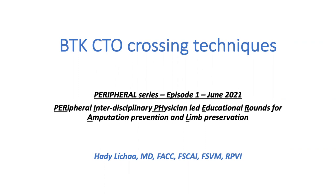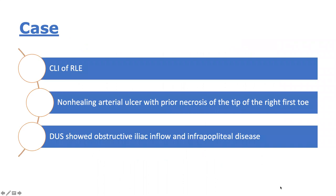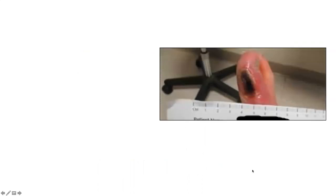The first episode deals with below-the-knee chronic total occlusion crossing, through a complex case performed a couple years ago. This case is right lower extremity critical limb ischemia with a non-healing arterial ulcer with bonecrosis of the tip of the right first toe, and duplex arterial ultrasound showing evidence of obstructive iliac inflow disease and infrapopliteal disease. The ulcer is perfused by the dorsal metatarsal branches of the dorsalis pedis artery, but also sometimes from the medial plantar branches of the posterior tibial — a combined angiosome of the DP and PT.